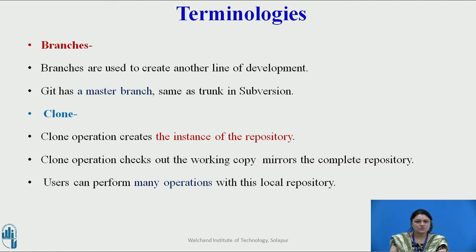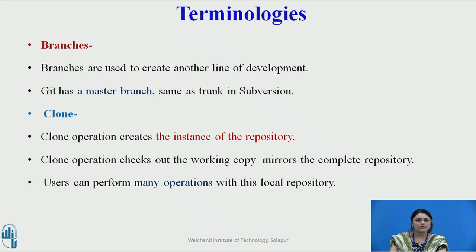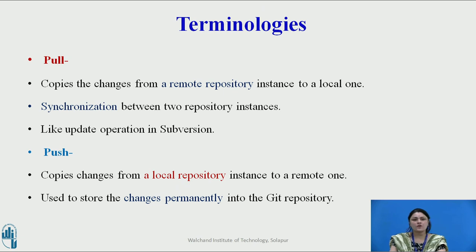Branches are used to create another line of development. Git by default has a master branch, similar to the trunk in Subversion. Usually a branch is created to work on a new feature. Clone: a clone operation creates an instance of a repository, not only checking out the working copy but also mirroring the complete repository. Networking is involved only when repository instances are being synchronized. Pull operation is used to download something from your repository, while Push is for uploading — when you make changes and want to permanently store them in your Git repository, you perform a push operation.